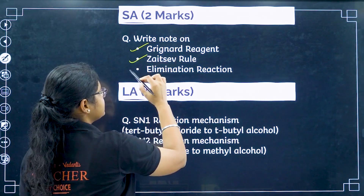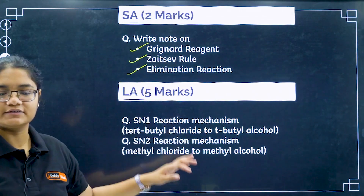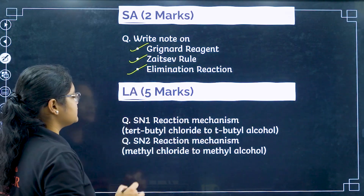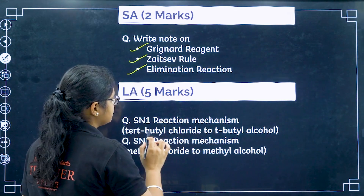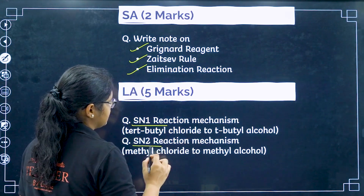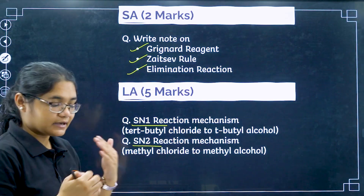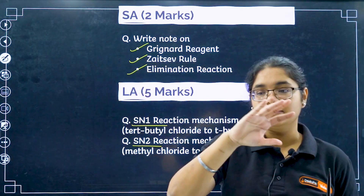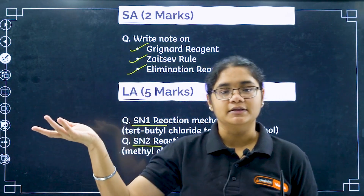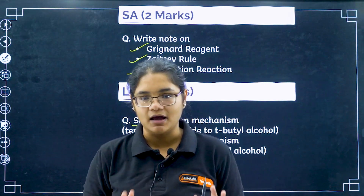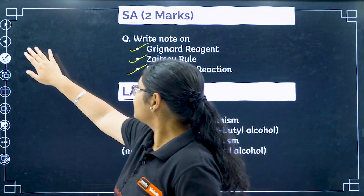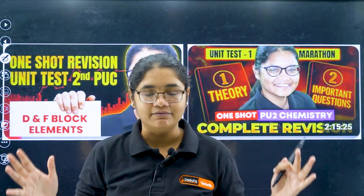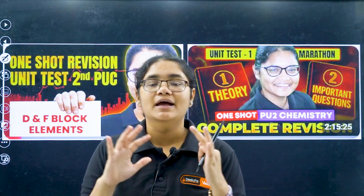Also prepare: a note on the Grignard reagent, Saytzeff's rule, and elimination reactions — these can appear in two-marker questions. For the five-marker section, only mechanisms can be asked: SN1 reaction mechanism and SN2 reaction mechanism. Fill-in-the-blank type questions where a reaction is given and you must find the product can also be asked.